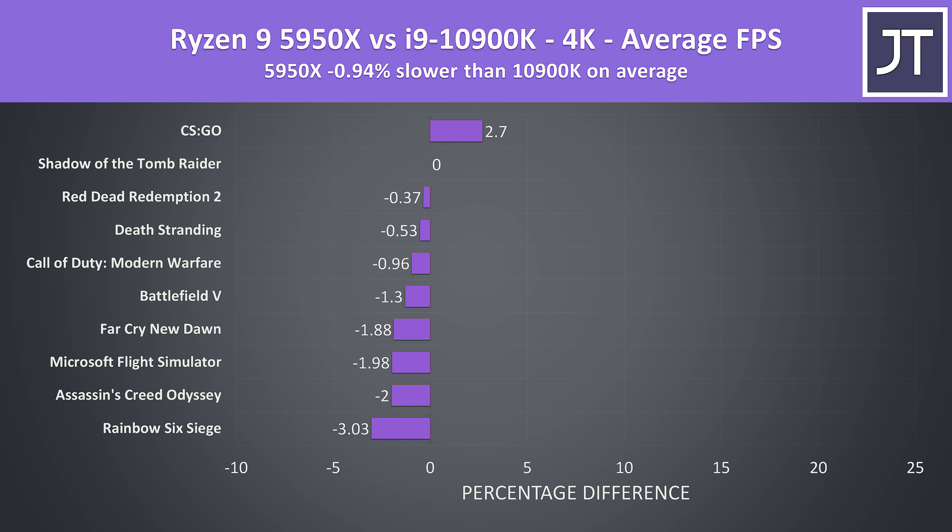At 4K the 5950X is around 1% slower than the 10900K, with more games slightly skewing over towards the Intel side. However, given the biggest difference is just 3%, these are unlikely to be noticeable differences in practice, so it's going to depend more on the price difference.